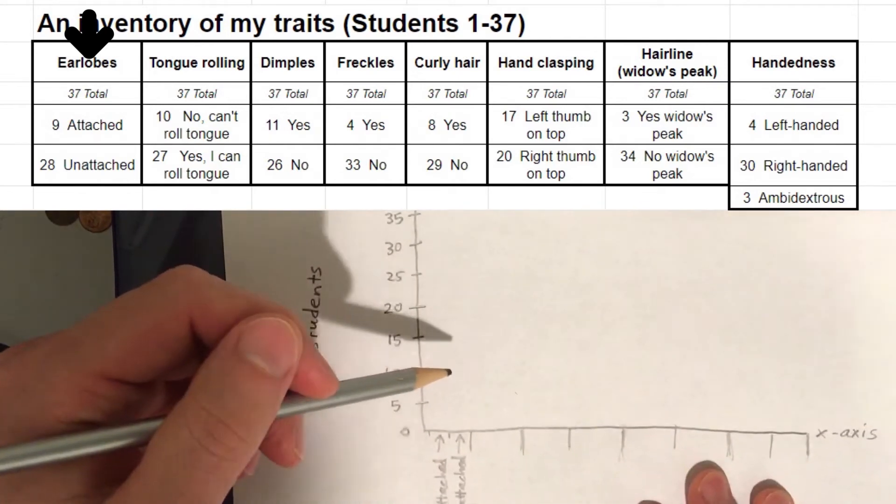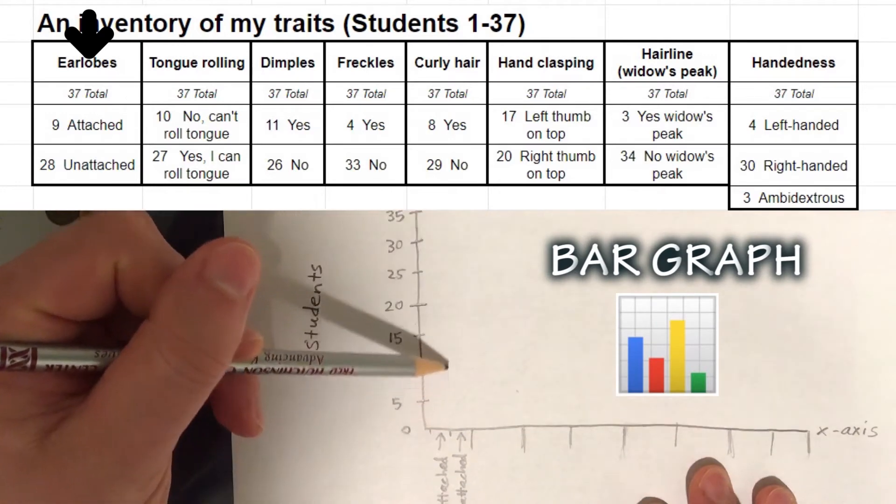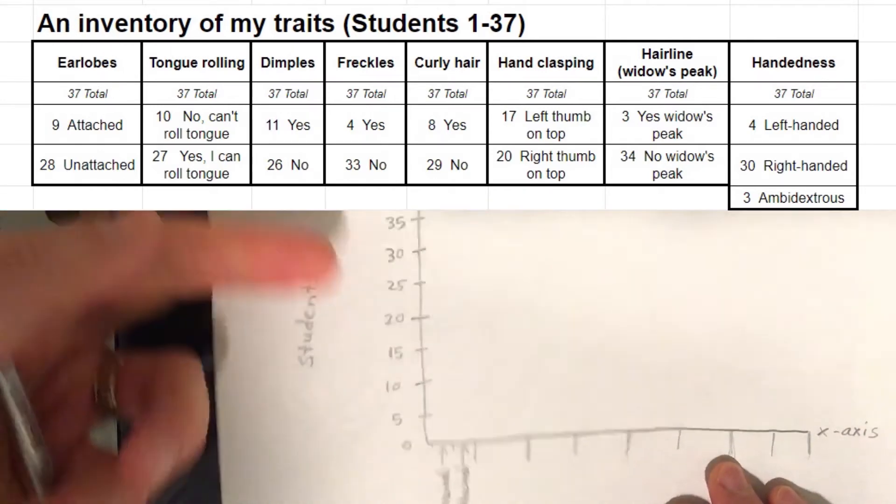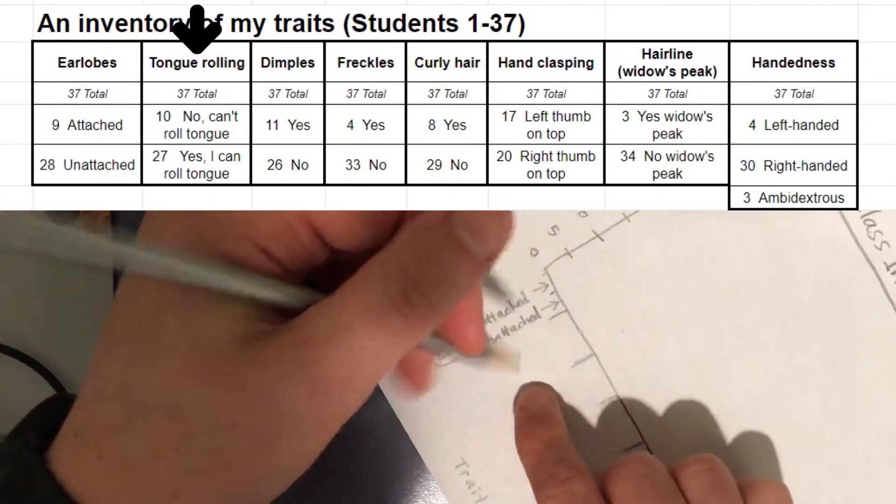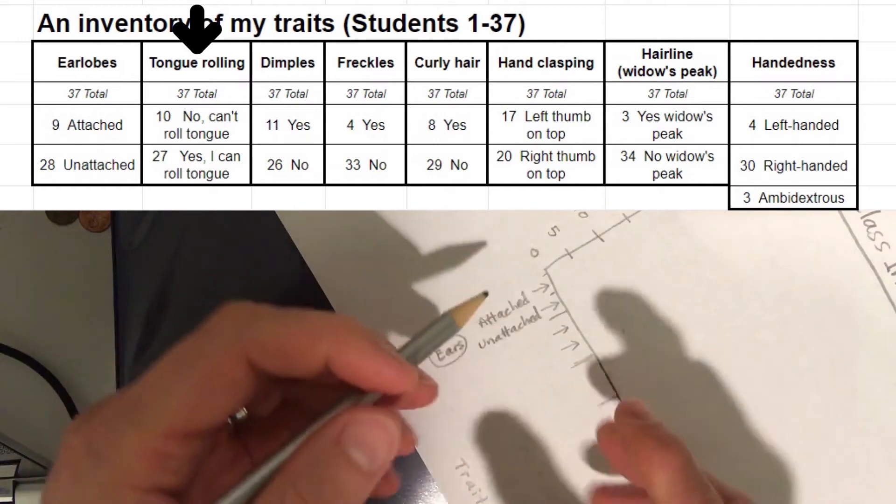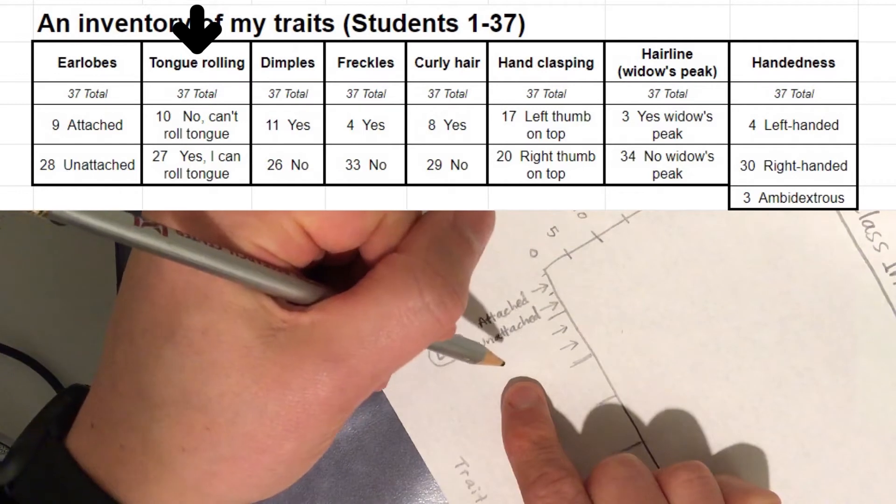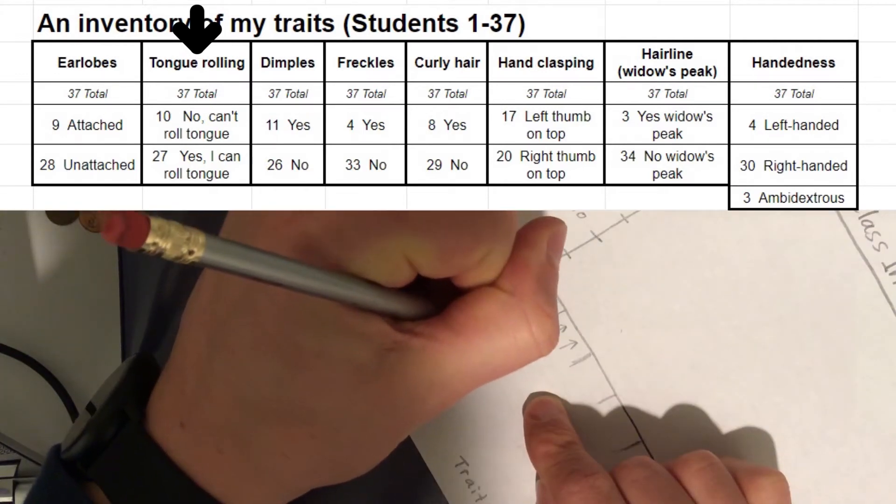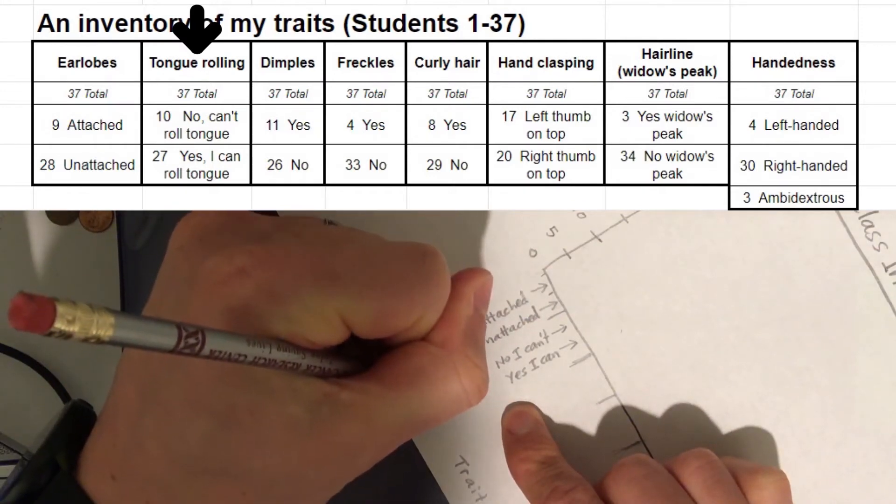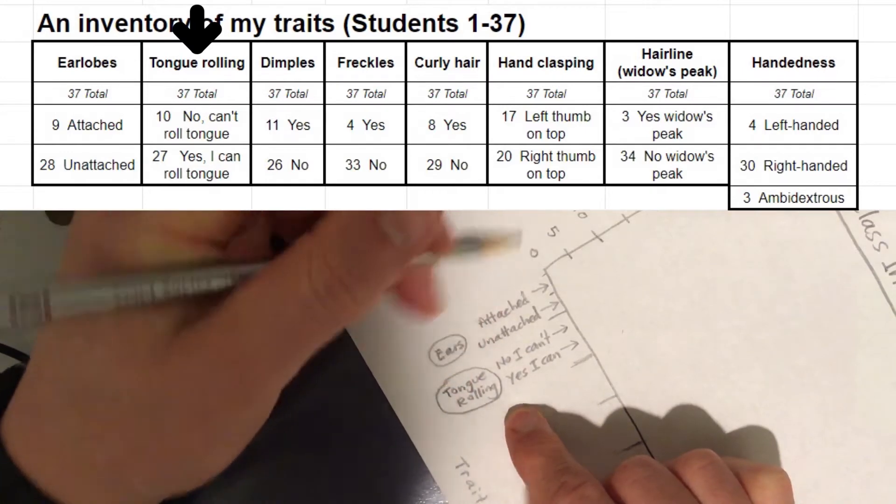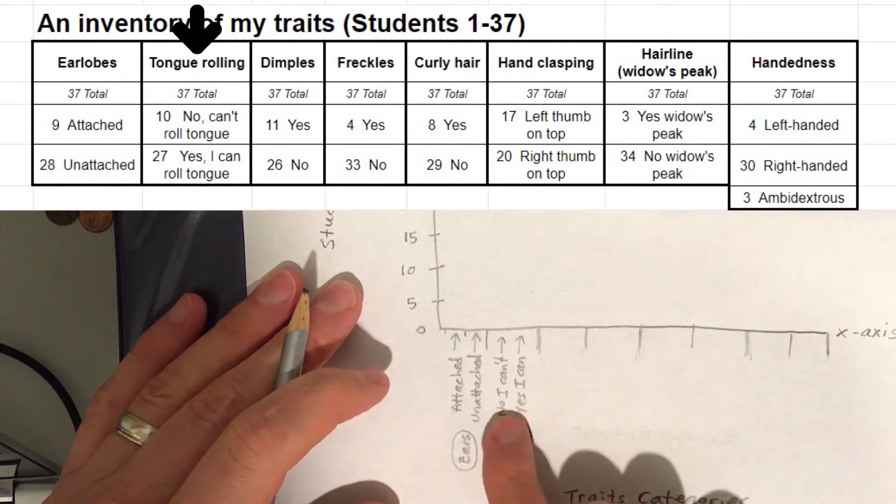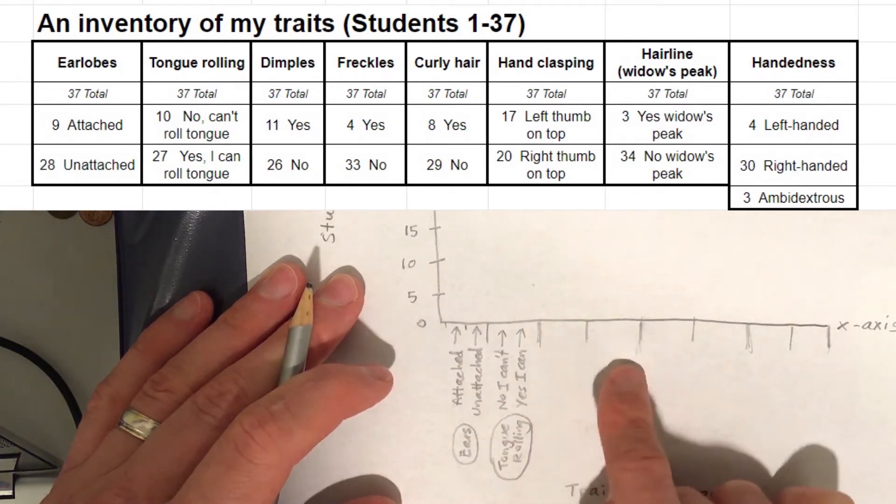And the next category, oh by the way, I forgot to mention to you that I am doing a bar graph. Okay? The number of attached earlobes are going to go up to a certain number of students. And the number of unattached earlobes is going to go up to a certain number of students. So you will see the comparison. I am going to do one more category which is tongue rolling. So tongue rolling, put a little arrow here and a little arrow here. You can design it a little differently if you want based on how you like to make graphs. But it needs to convey the information properly. Okay? So for tongue, no I can't roll my tongue. Or yes, I can roll my tongue. I am going to put tongue, tongue rolling. And I am going to circle that.